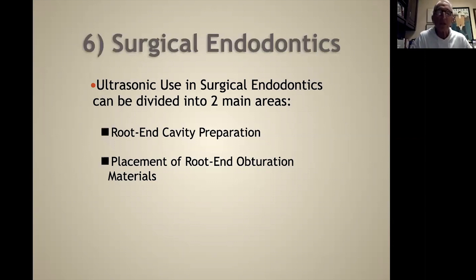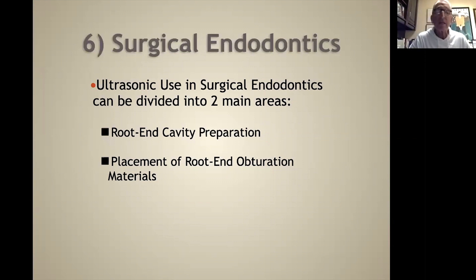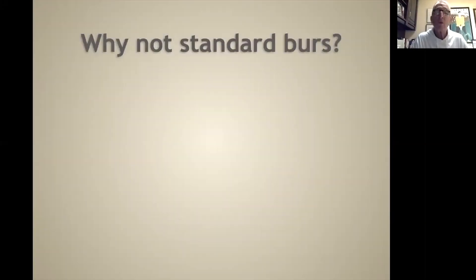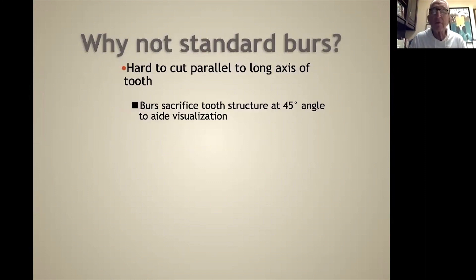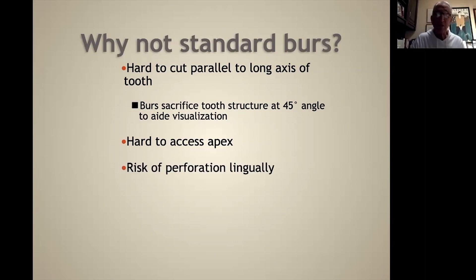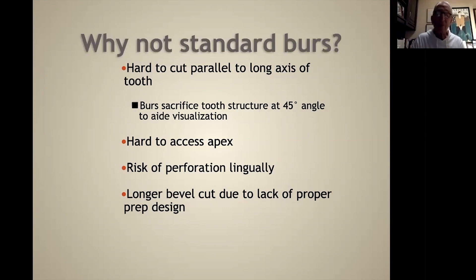The last application of ultrasonics is surgical endodontics. This has been amazing — prior to ultrasonics and advances in material science, we were only getting 59 to 70 percent success in surgery. Now the literature shows we're getting better than 93 percent. Ultrasonic use in surgical endodontics is divided into two main areas: root-end cavity preparation and placement of root-end obturation materials. Why not use standard burs as before? It's hard to cut parallel to the long axis of the tooth; burs may sacrifice tooth structure, especially at a 45-degree angle. There's hard access to the apex, risk of perforation especially lingually, and the longer bevel cut leaves accessory lateral canals exposed in the apical 3-4 millimeters.